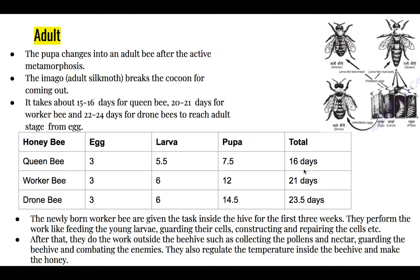Newly born worker bees are given tasks inside the hive for the first three weeks. During the first three weeks, they work inside the beehive: they feed young larvae, guard the cells, and construct and repair the cells. After three weeks they go outside the beehive to collect pollen grains and nectar, guard the beehive, and combat enemies.